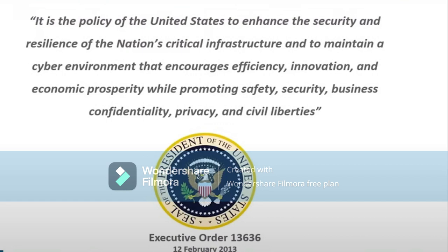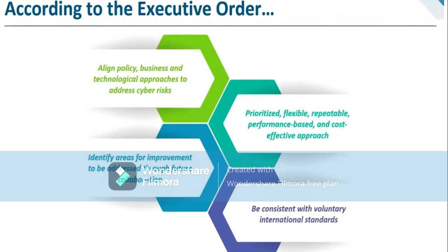What this is saying is that it is the policy of the United States to actually enhance your system, protecting it from all kinds of threats, and giving the world effective ideas. It helps the economy to prosper, promotes safety, security, and business confidentiality — the CIA principle — meaning a particular system should not be compromised or have its data leaked. Privacy should be kept intact and there should be civil liabilities. Policy should align with business and technology approaches to address cyber risk, prioritizing flexible, repeatable, performance-based, and cost-effective approaches, and identifying areas for improvement through future collaborations, consistent with voluntary international standards.